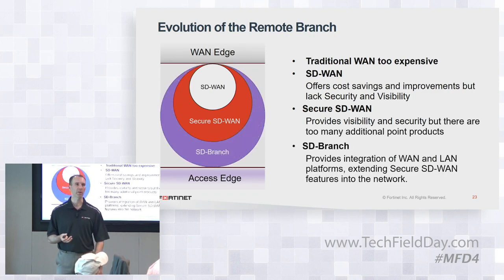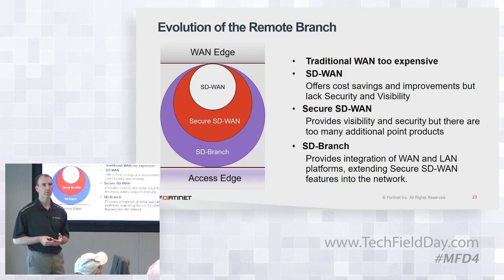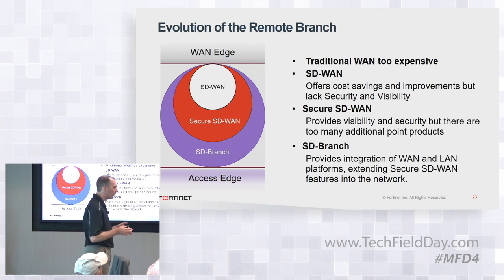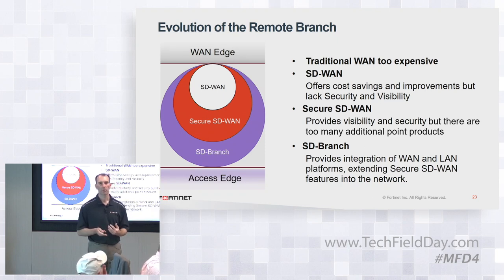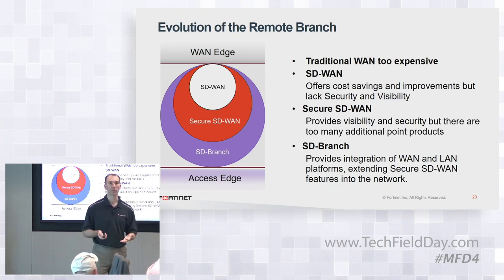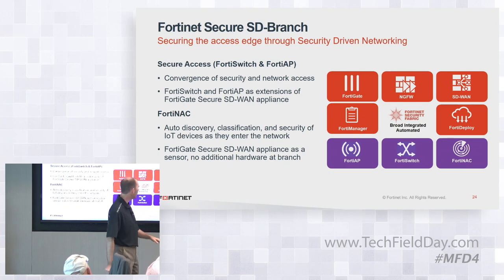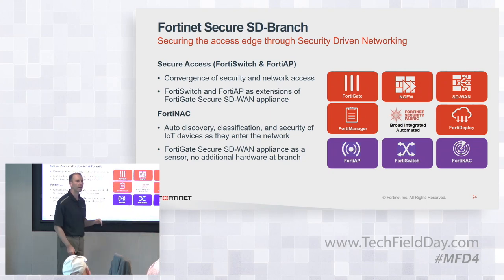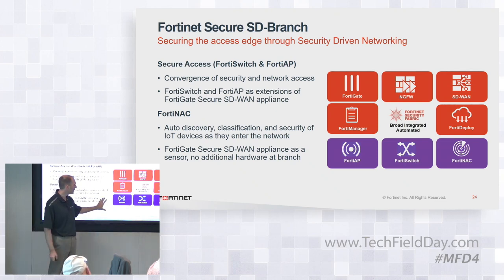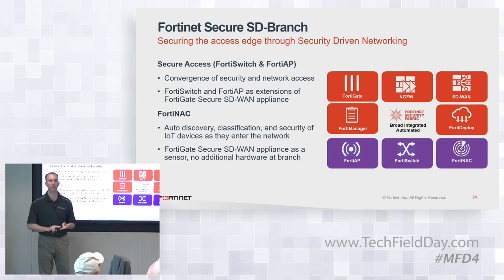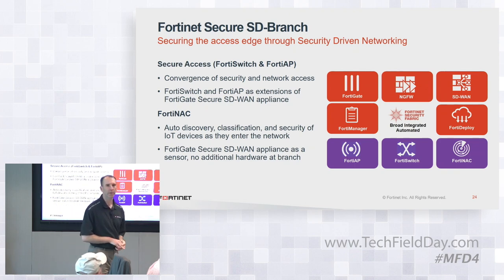That's why Fortinet has started talking about this at an SD branch level — we want to converge and integrate security and control from the WAN edge all the way down to the access edge, making it simple to provide a branch that is secure all in one location under one easy banner. That means taking the SD-WAN piece — FortiGate with its built-in SD-WAN — and layering in the access products: FortiAP and FortiSwitch.